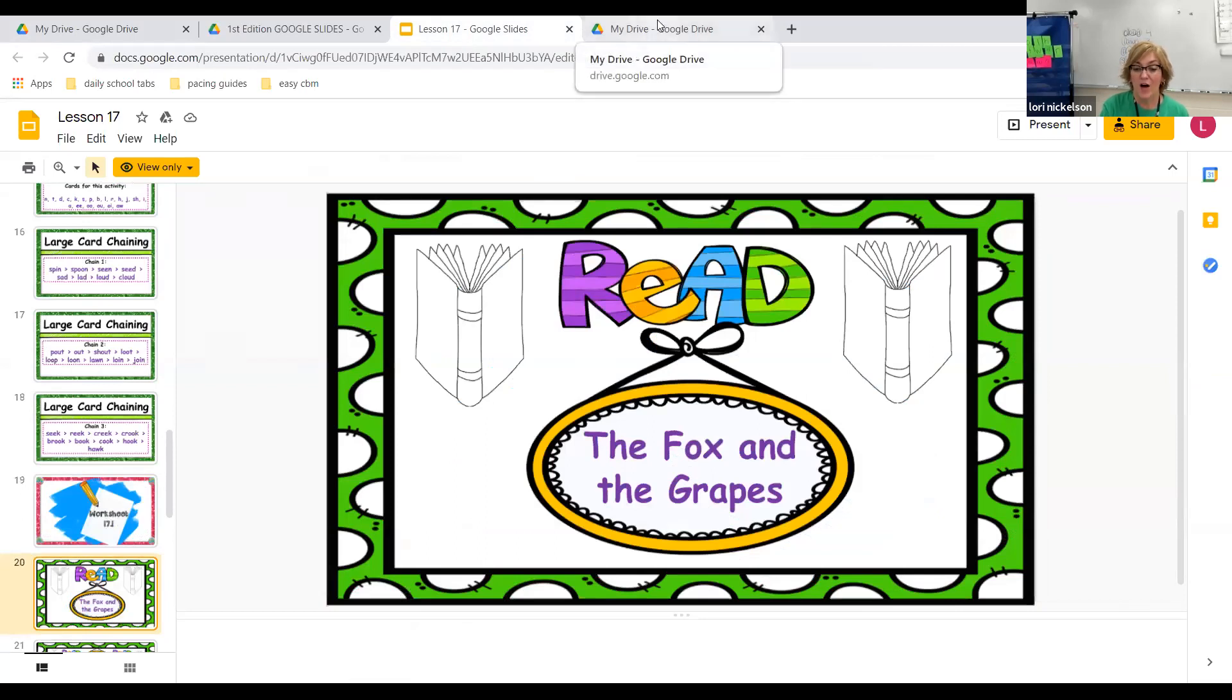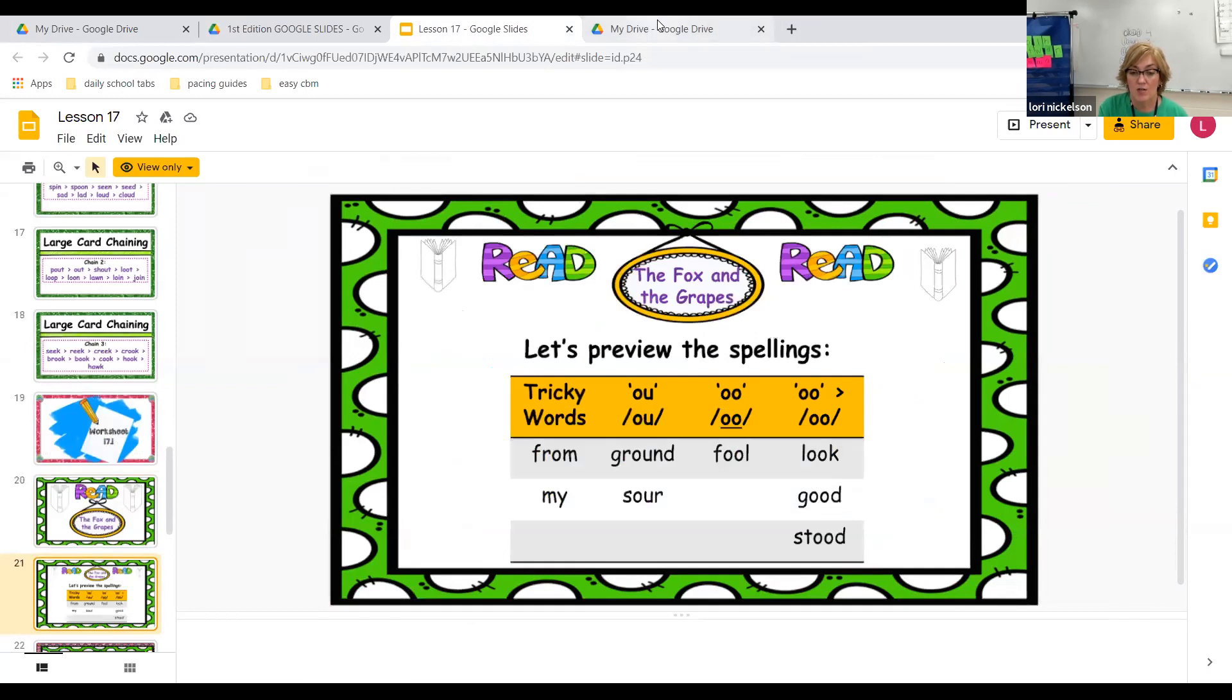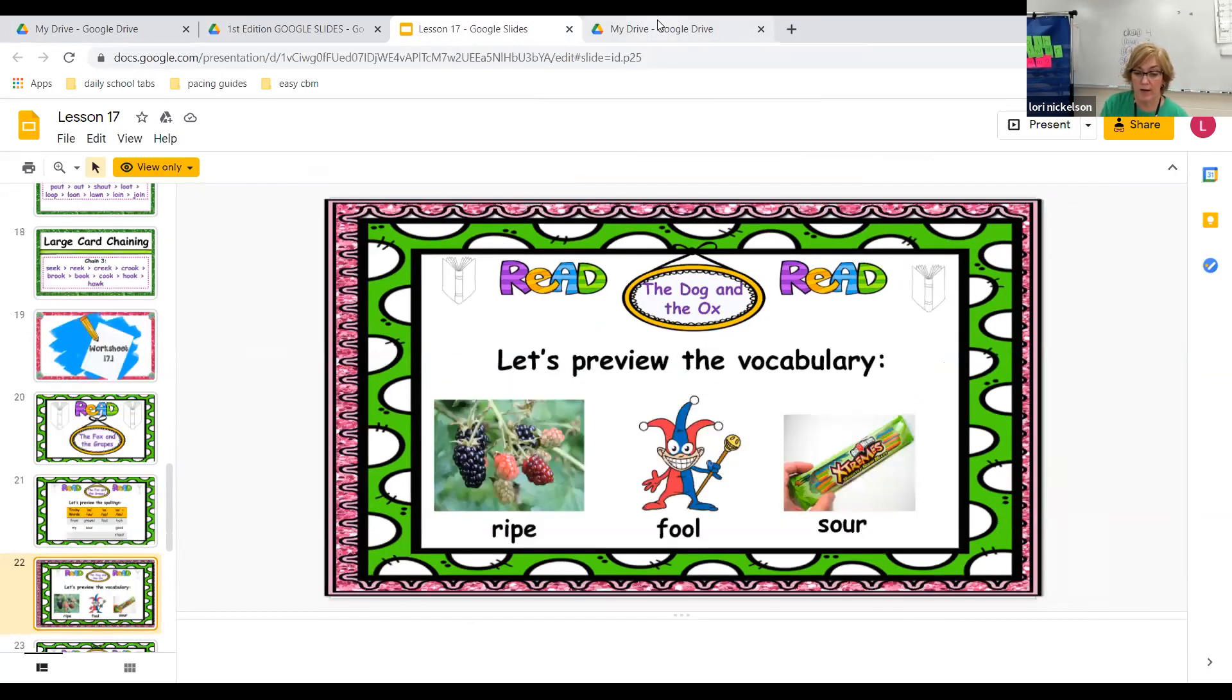All right. So now we're going to read the fox and the grapes. Our spelling preview for tricky words is from and my. We have ow as in ground and sour. We have the oo as in fool and look and good and stood. So let's preview some vocabulary. We have the word ripe. Ripe means that it's easy to be eaten. It's juicy and it's sweet. Our next word is fool. Fool is someone who is silly. And sour, that means it is sharp or tart tasting. It's like a lemon.